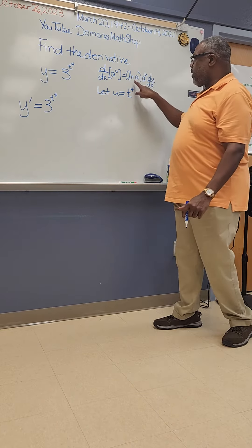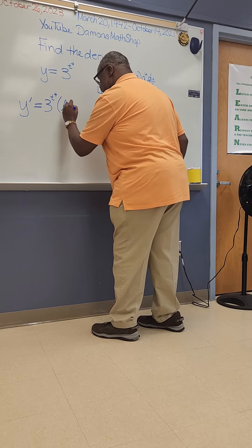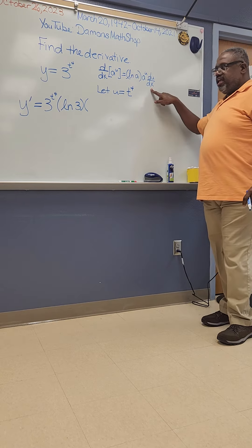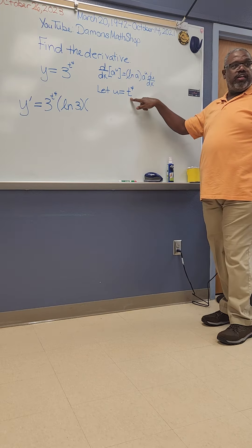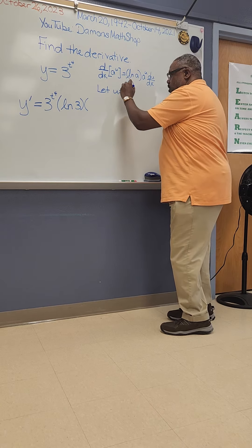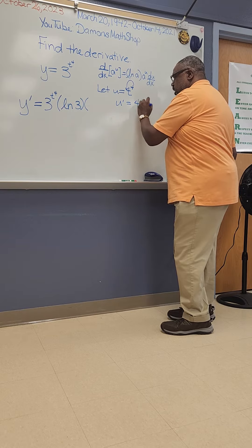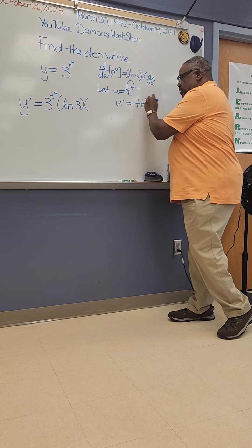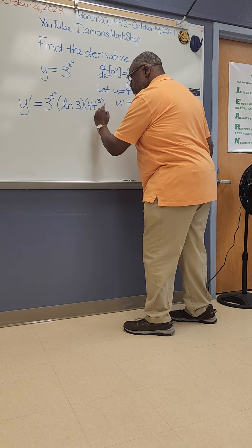I'm going to multiply it times the natural log of the base, so the natural log of 3, and then multiply it times the derivative of u. Since u equals t to the 4th power, I take the 4, bring it down — which gives 4t — but you lose a power, so 4 minus 1 is 3, and this becomes 4t to the 3rd power.